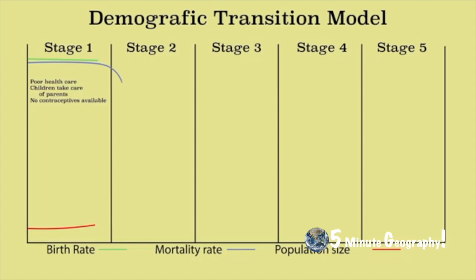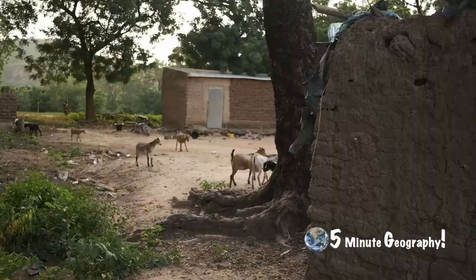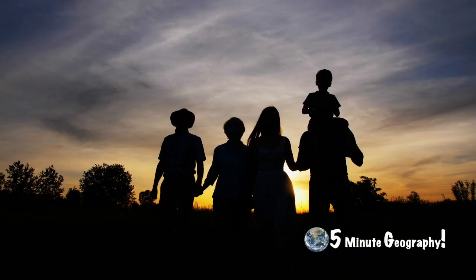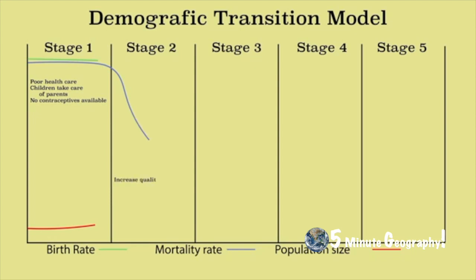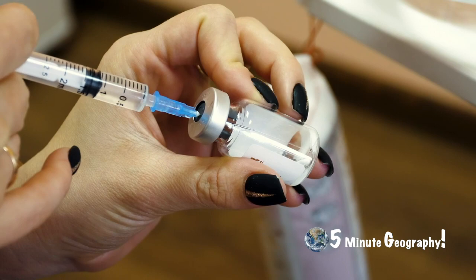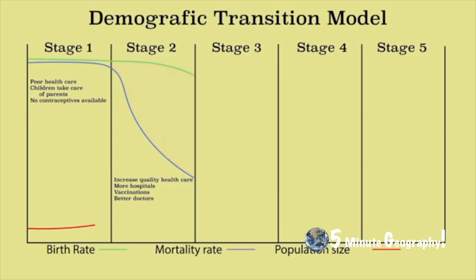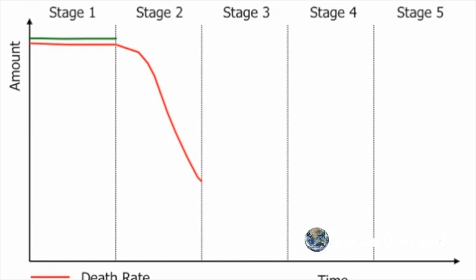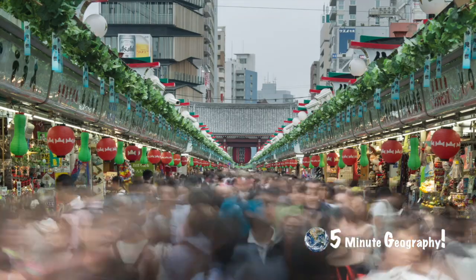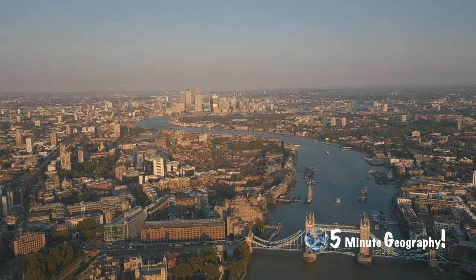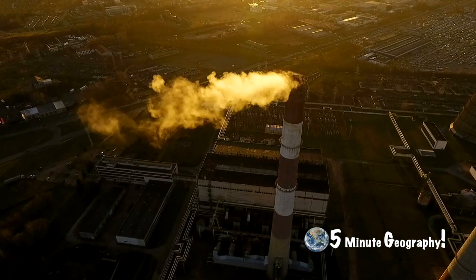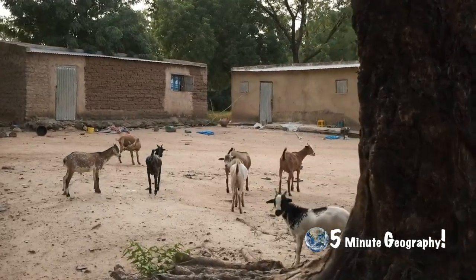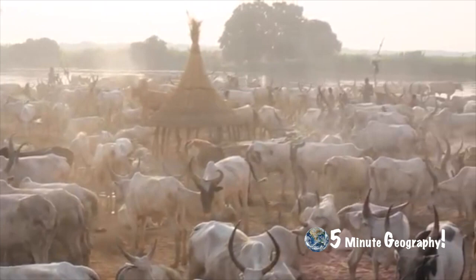In Stage 2, or the early expanding stage, the economy begins to grow. Birth rates remain high because of the low status of women, high infant death rates, and the tradition of having large families. Death rates decline sharply due to new technologies such as filtered water and childhood vaccinations, leading to a sharp natural increase in overall population. Europe was at this stage during the 19th century industrial revolution, and today countries in the early stage of development, mainly sub-Saharan Africa such as South Sudan, are at this stage.